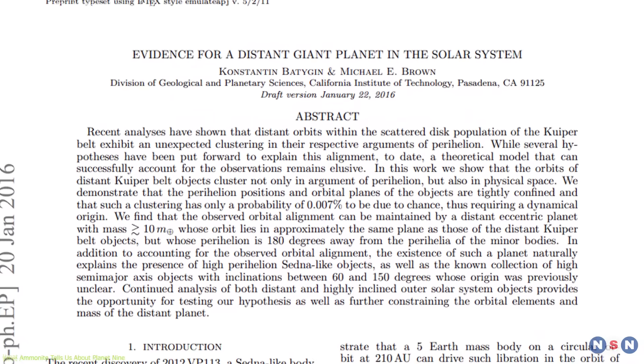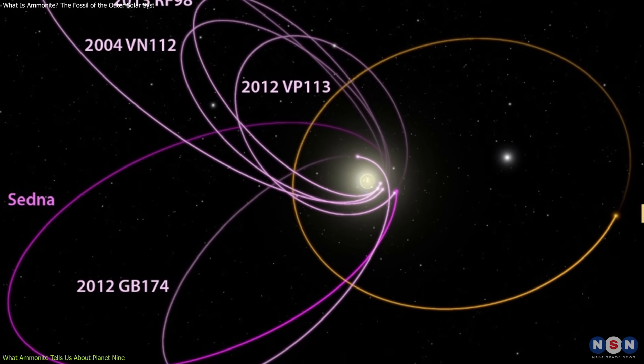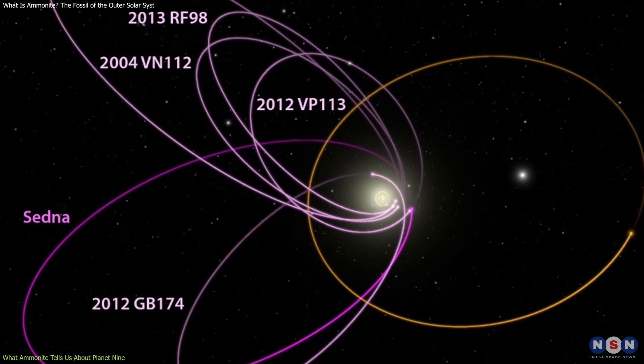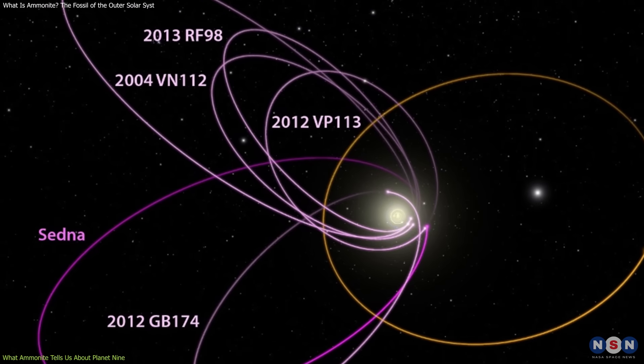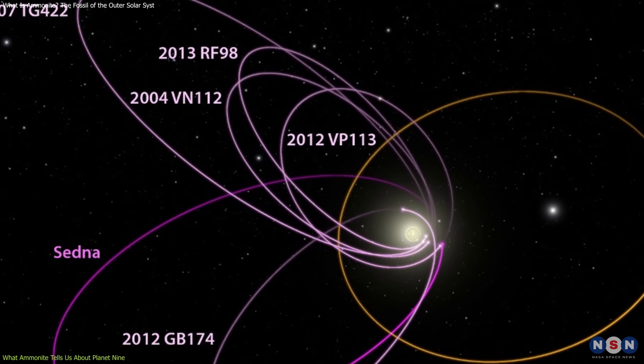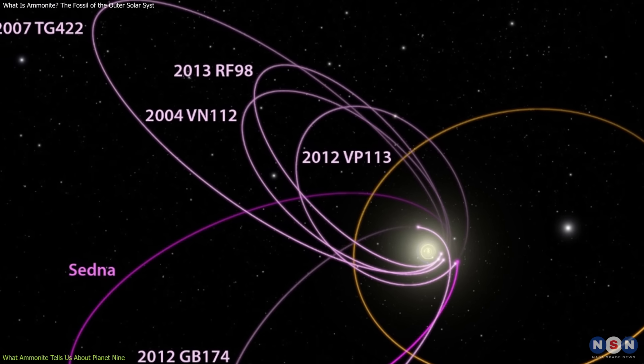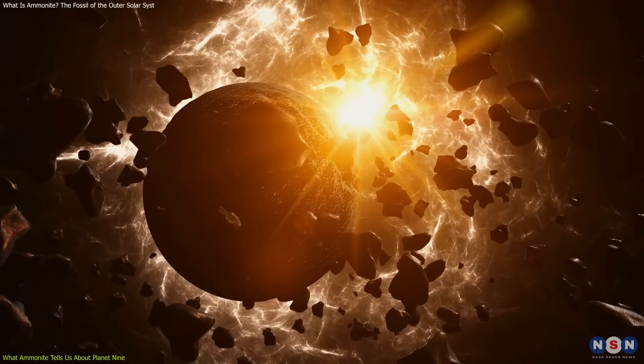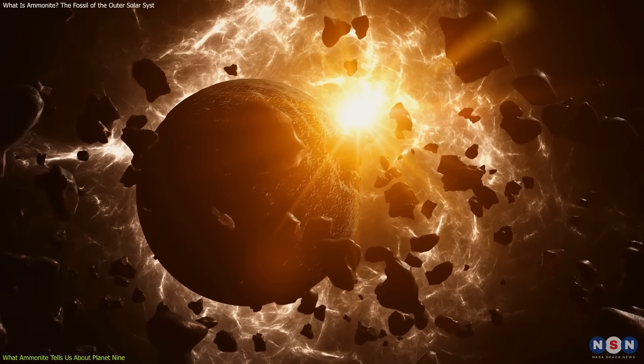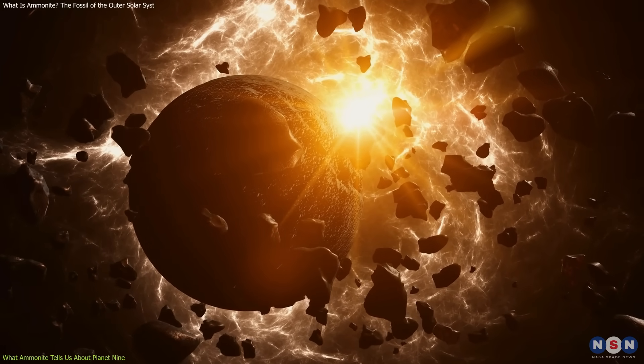This idea gained traction in 2016, when astronomers noticed that six or more extreme trans-Neptunian objects, TNOs, including sednoids, shared similar orbital characteristics. The simplest explanation? Something massive was shepherding their paths.